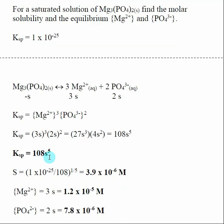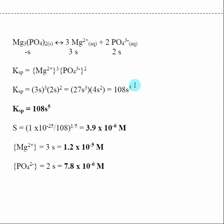Once we find S, the concentration of Mg²⁺ is 3 × S = 1.2 × 10⁻⁵ molar, and the concentration of phosphate is 2 × S = 7.8 × 10⁻⁶ molar. The more complex the salt, the more complex the solubility product calculation becomes. You need to make sure you understand how to have your calculator take a fifth root of something.